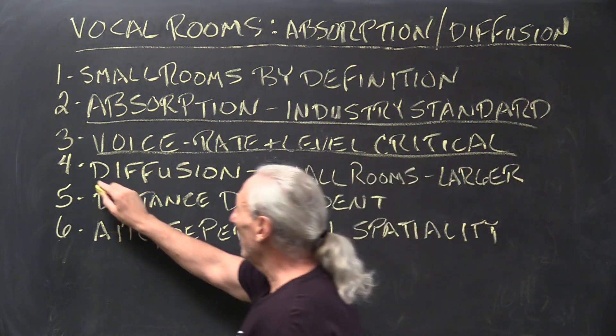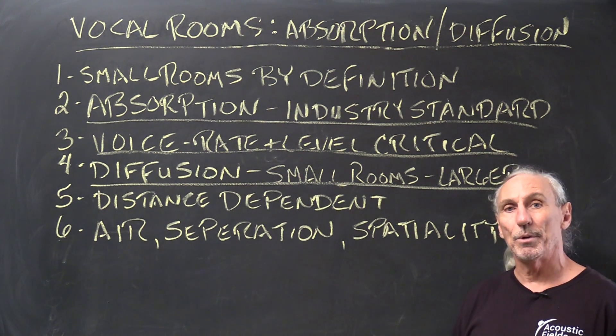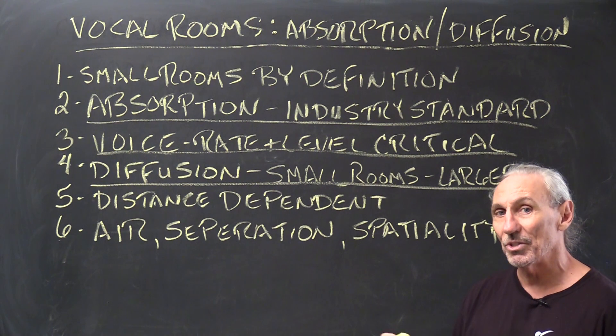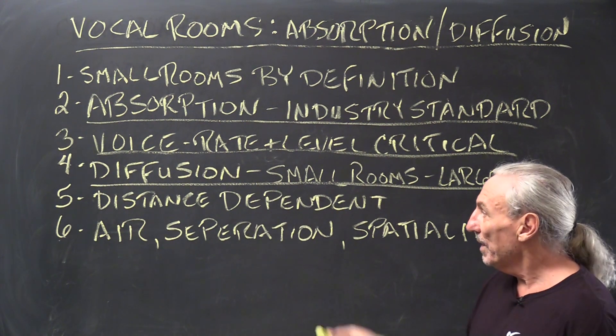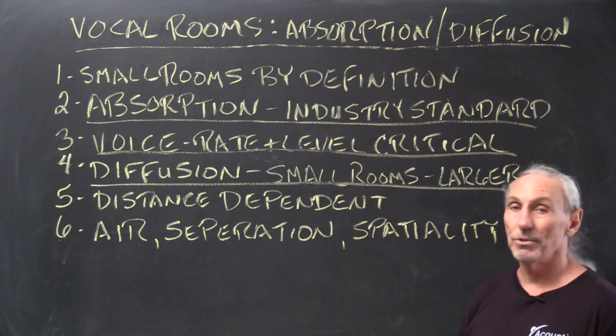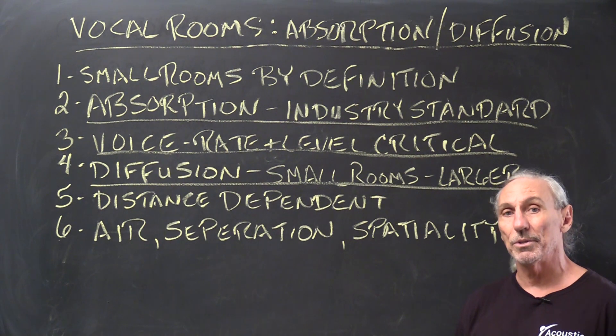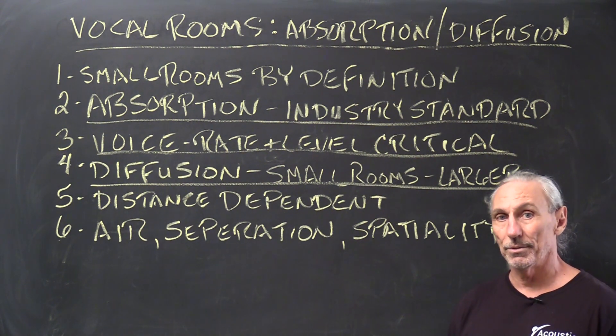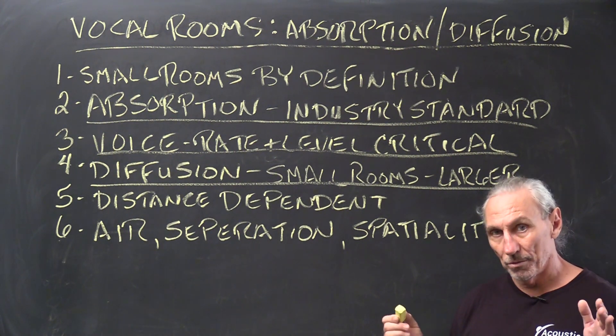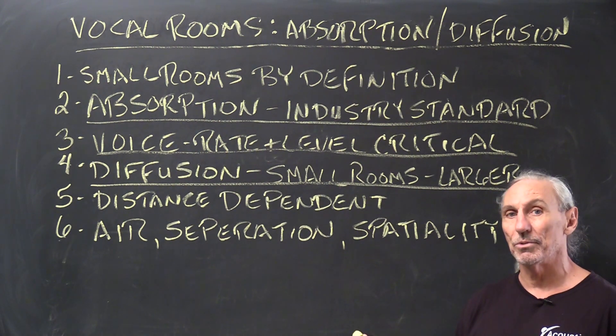So what's a technology that we can take once we have the right rate and level of absorption to manage the reverberation time in the room to get nice definition and clarity? What can we use to make the room sound bigger in the analog domain? Diffusion, and quadratic obviously is the only one we use because it's the only true diffusion technology. There's five rigid criteria of physics to create a diffused sound field. It's the law of physics and most technologies don't do that.